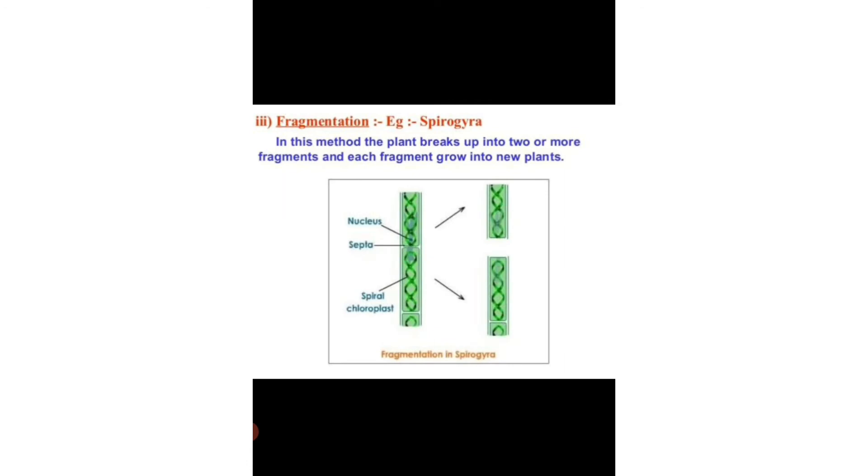Next we have fragmentation. For example, spirogyra. In this method, the plant breaks up into two or more fragments and each fragment grows into a new plant. Here is the picture, you can have a look.